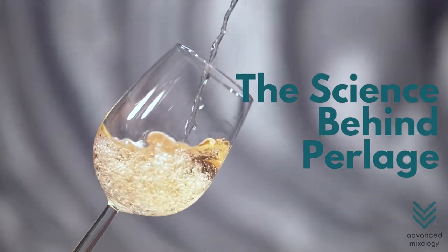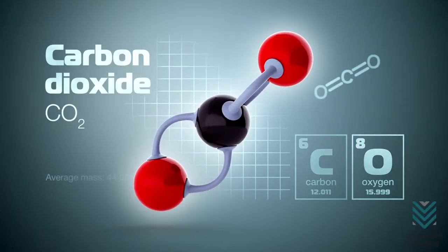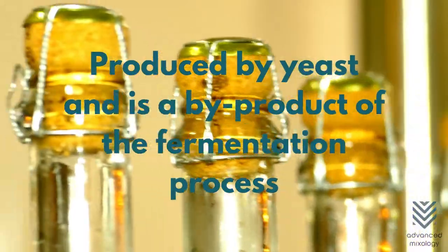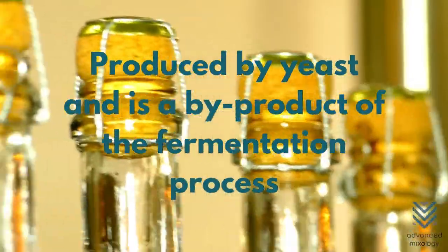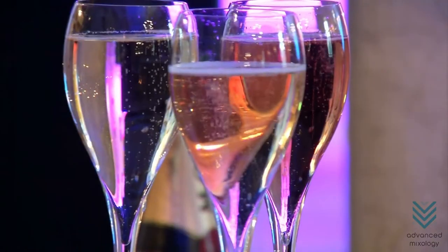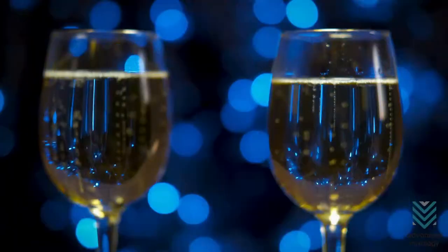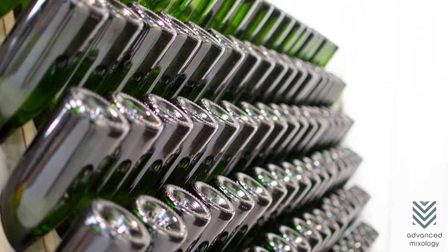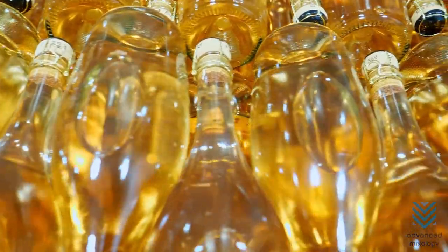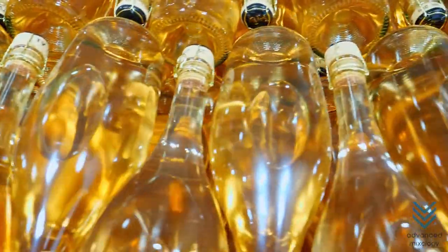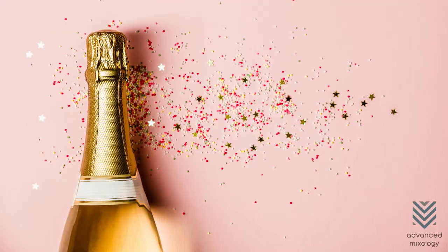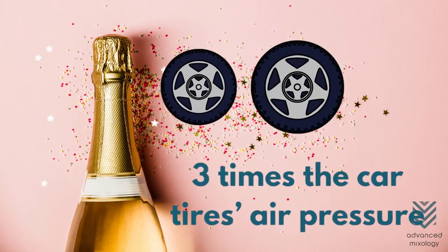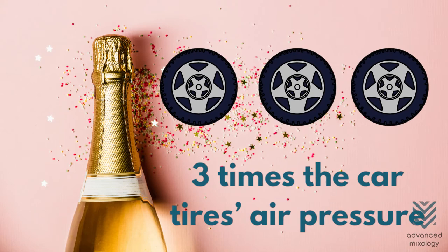The Science Behind Perlage. Carbon dioxide is what makes up the bubbles. It is produced by yeast and is a byproduct of the fermentation process. Sparkling wines undergo a second fermentation process that occurs when they are already bottled, forming more carbon dioxide. This gas becomes dissolved because it can't escape the sealed bottles. This eventually creates a high pressure within the bottle of wine, about three times the car tire's air pressure.